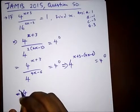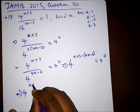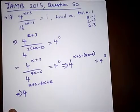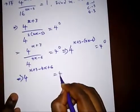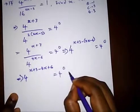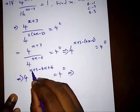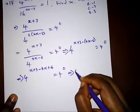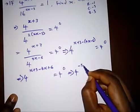Opening this bracket, we have 4 raised to power x plus 3 minus 4x plus 6 equal to 4 raised to power 0. We can break this down: x minus 4x is minus 3x.